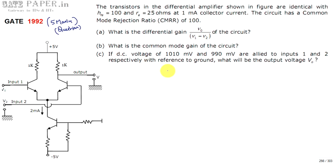We are discussing a GATE 1992 ECE paper question related to analog circuits. It is a differential amplifier circuit where both transistors are identical with HFE (forward current gain) of 100. RE is the input resistance across the base-emitter junction when looking into the emitter, with a value of 25 ohms at 1 milliampere collector current. The circuit has a CMRR of 100. We will calculate the differential mode gain V0/(V1 - V2).